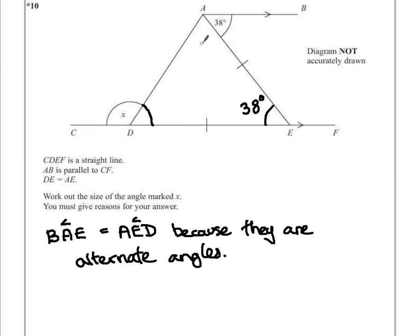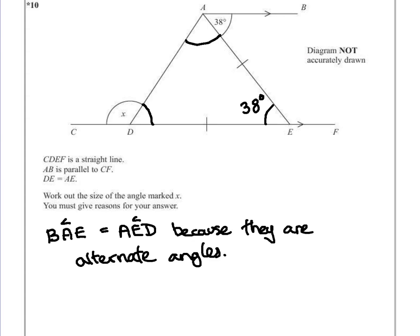But the other piece of information we've given shows that we've got what's called an isosceles triangle. Both sides of this triangle are the same length. That also tells us then, that the angle DAE is the same as ADE.